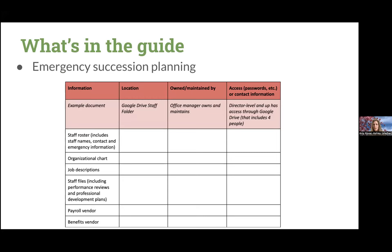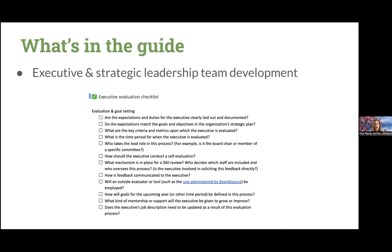The first part of the guide is about emergency succession planning — it's really the place to start. My guide has a bunch of different worksheets to help folks think about what succession planning looks like from an emergency standpoint: where all your documents live, where the keys to everything live. The second chapter is about actually developing the leadership team, thinking through what it takes to build up leadership skills amongst a team. Just as staff need performance evaluation, so do executives and leadership teams, and there are several checklists in this part of the guide.